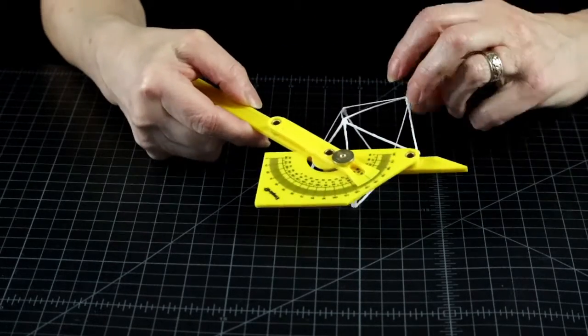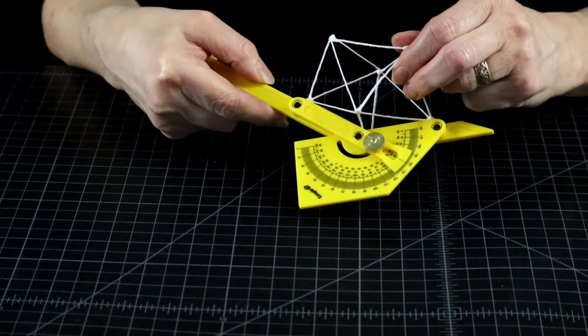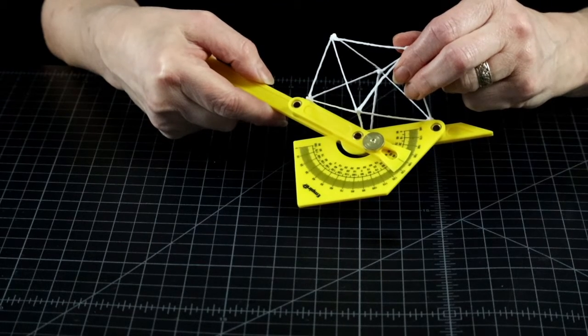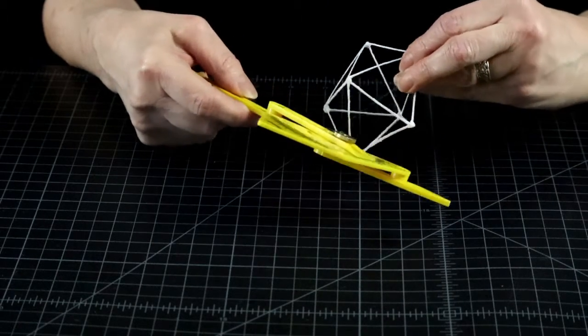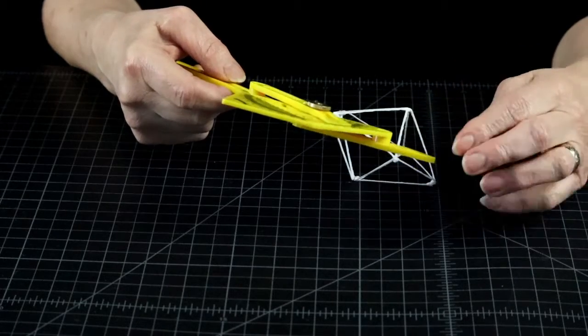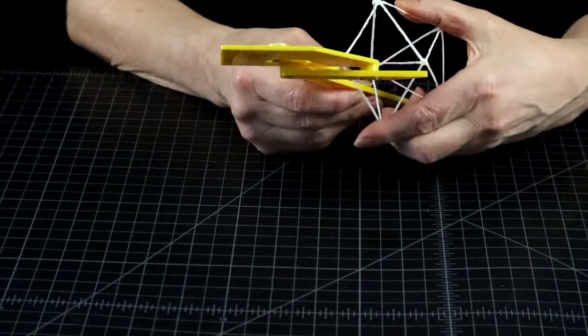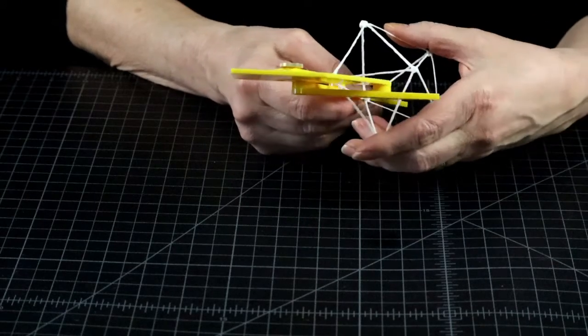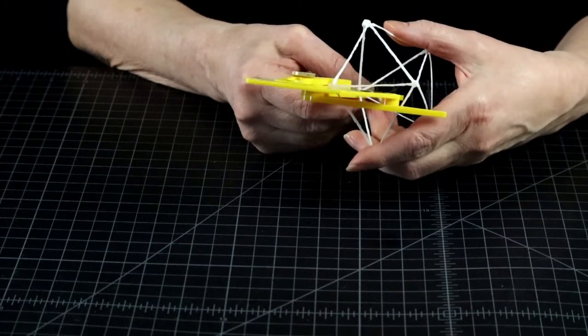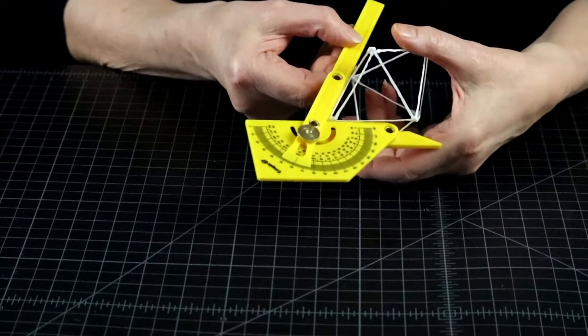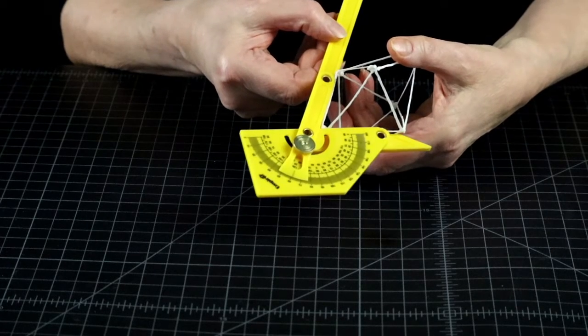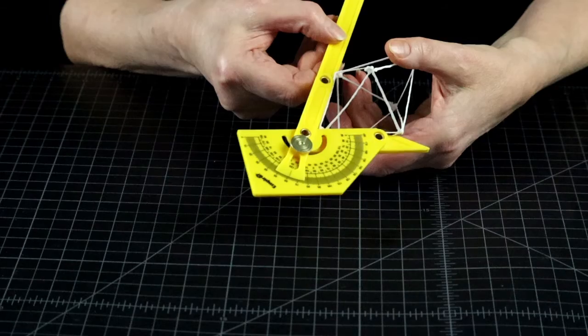So let's measure this guy. These top triangles are joined at 138 degrees. Nice open obtuse angle. But right here in the middle, this one is a pretty sharp acute angle. Something like 68 degrees. Sorry, this shape doesn't work.